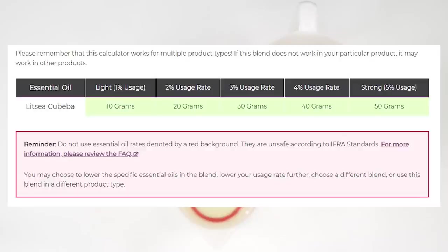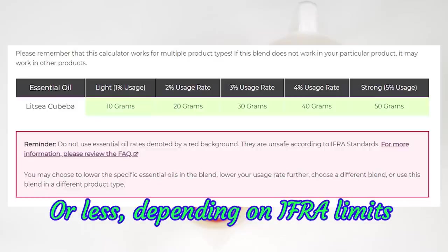So for example I've just got a little shot on the screen where I've just put using Litsi Kubea in a soap and it's recommended up to 5% usage. Now because of the citral content in Litsi Kubea in the EU and the UK you're not allowed anywhere near that amount of Mei Chang in your soaps and in fact all essential oils will be limited to a maximum of 3% and when you're blending there are further restrictions as well.